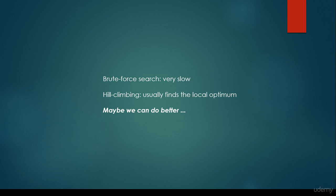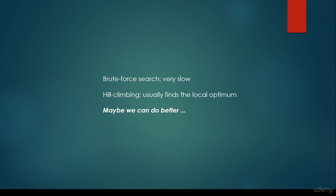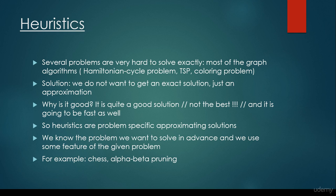Then we have considered hill climbing. The problem with hill climbing is that it usually finds the local optimum instead of the global one. So maybe we can do better, and basically this is why heuristics and meta-heuristics have came to be.